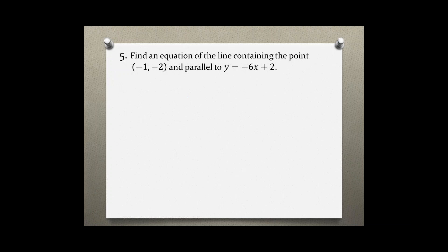Find an equation of the line containing the point (-1, -2) and parallel to y = -6x + 2. Parallel is the keyword, parallel to this equation which also represents a line. So based on the slope-intercept form y = mx + b, we know that the number in front of the x is the slope.